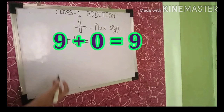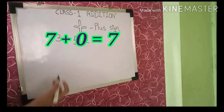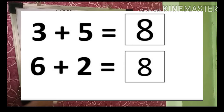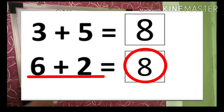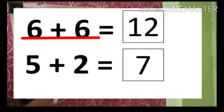Let us see some examples. Nine plus zero is equal to nine itself. Seven plus zero is equal to seven itself. Three plus five — after three we count five, so we get eight. Six plus two — after six we count two: seven, eight, so we get eight. Six plus six — after six we count six more and we get twelve.